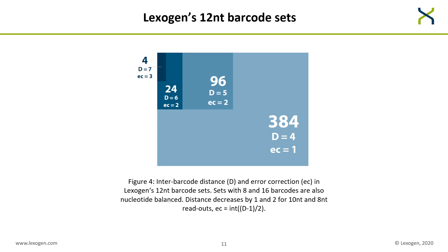This slide shows the final barcode set we obtained. We have a set of 384 barcodes with an inter-barcode distance of 4, correcting a single error. This contains a barcode set of 96 with a distance of 5, correcting 2 errors, which in turn contains sets of 24 and 4 with their respective distances. These properties apply to 12 nucleotide long barcodes. For 10 and 8 nucleotide barcodes, subtract 1 and 2 respectively from the distance and calculate errors corrected accordingly. For example, for 8 nucleotides and a set of 4, we have a distance of 5 correcting 2 errors; for 8 nucleotides and the 24-barcode set, a distance of 4 correcting a single error.